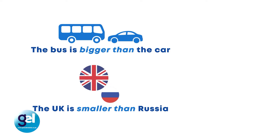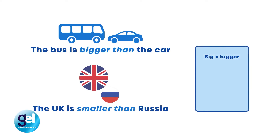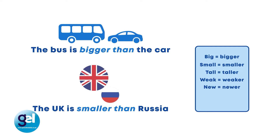Grammatically, we form comparative adjectives by adding -er to the adjective. Big becomes bigger, small becomes smaller, tall becomes taller, weak becomes weaker, new becomes newer, fair becomes fairer, and brave becomes braver.